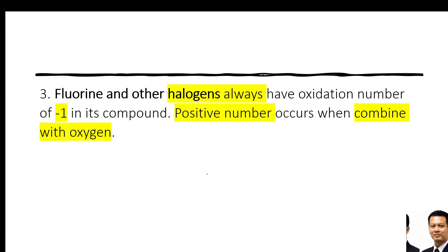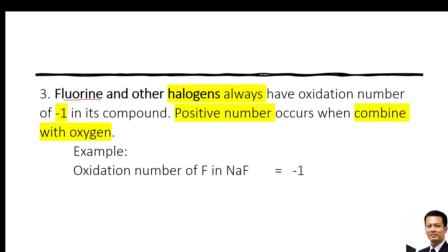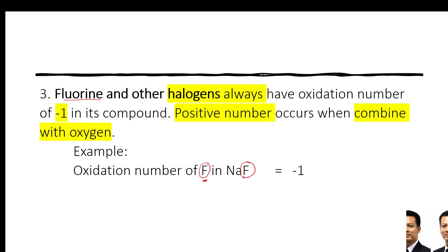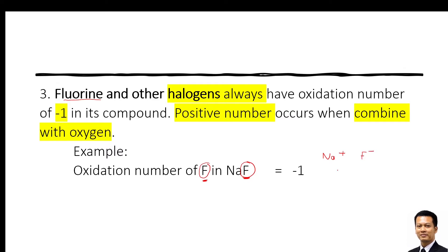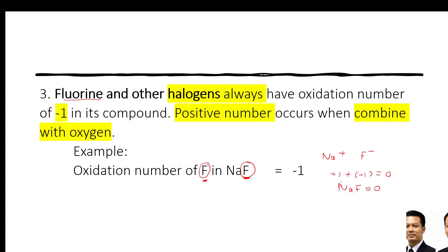Halogens always have −1 in their compounds. Fluorine is a halogen. A positive number can occur when the halogen is bonded with oxygen. For example, the oxidation number of fluorine in NaF is −1. Because Na becomes Na⁺ and fluorine becomes F⁻. Positive 1 plus negative 1 equals 0 — that's why NaF as a molecule has oxidation number 0. But the oxidation number for fluorine is −1 and for Na is +1.